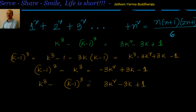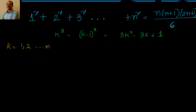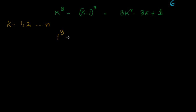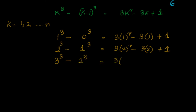Now why we are taking this identity — because we want to give values of k equal to 1, 2, up to n terms. For k=1: 1 cube minus 0 cube equals 3(1 square) minus 3(1) plus 1. For k=2: 2 cube minus 1 cube equals 3(2 square) minus 3(2) plus 1. For k=3: 3 cube minus 2 cube equals 3(3 square) minus 3(3) plus 1.